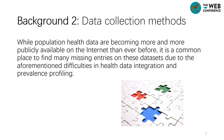While population health data are becoming more publicly available on the internet than ever before, it is commonplace to find many missing entries on these data sites due to the aforementioned difficulties in health data integration and prevalence profiling. The data incompleteness significantly lowers the quality and power of the released data, which hinders timely data analysis and reliable knowledge generation by public health authorities or researchers. To bridge this gap, we propose a new approach named Compressive Population Health (CPH) for completing the missing entries of prevalence rates for multiple chronic diseases, thus enabling construction of a reliable and timely population health monitoring picture for the current year.